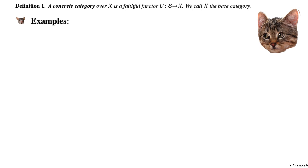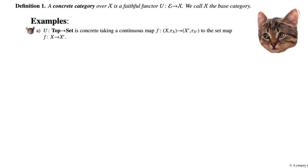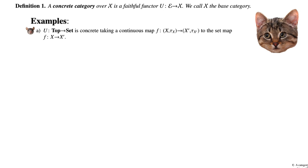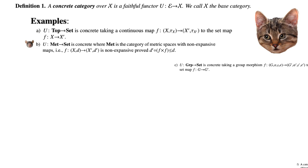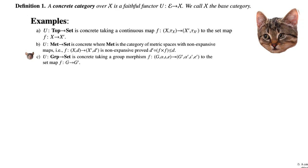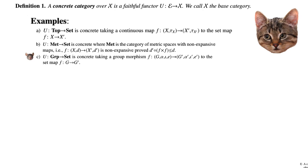Let's give some examples. The first example is that there is a forgetful functor from the category of topological spaces to Set, which is concrete — it takes continuous maps f from X to X-prime in topological spaces to the set map f: X → X-prime. Similarly, we have a forgetful functor from the category of metric spaces with non-expansive maps to Set. Another algebraic example is a forgetful functor from the category of groups to Set, which forgets all the operations that give a group structure.